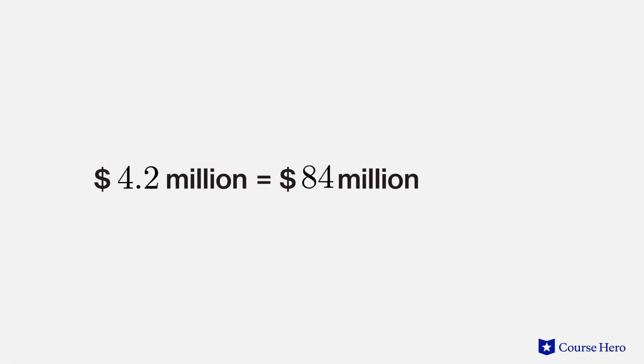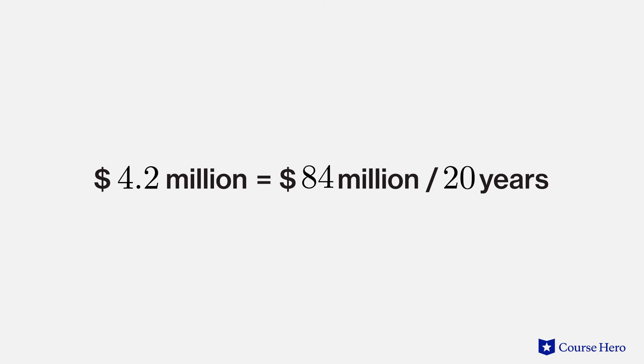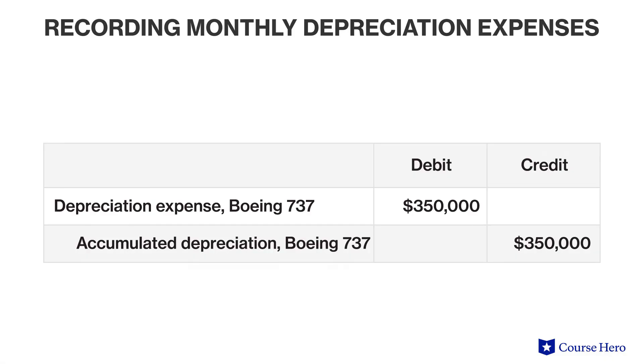The recording of depreciation expense supports the matching principle. Accumulated depreciation is recorded at the end of the period. In the case of the $84 million airplane depreciated using the straight-line method over 20 years, the annual depreciation expense would be $84 million divided by 20 years, or $4.2 million. If the company records the depreciation expense monthly, the expense would be $4.2 million divided by 12 months, or $350,000 per month.